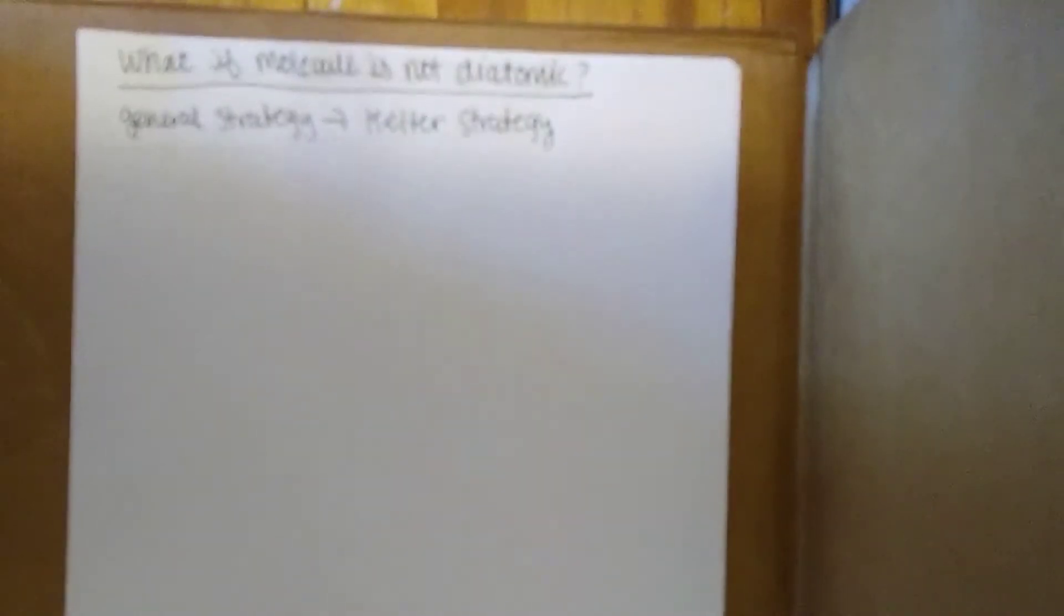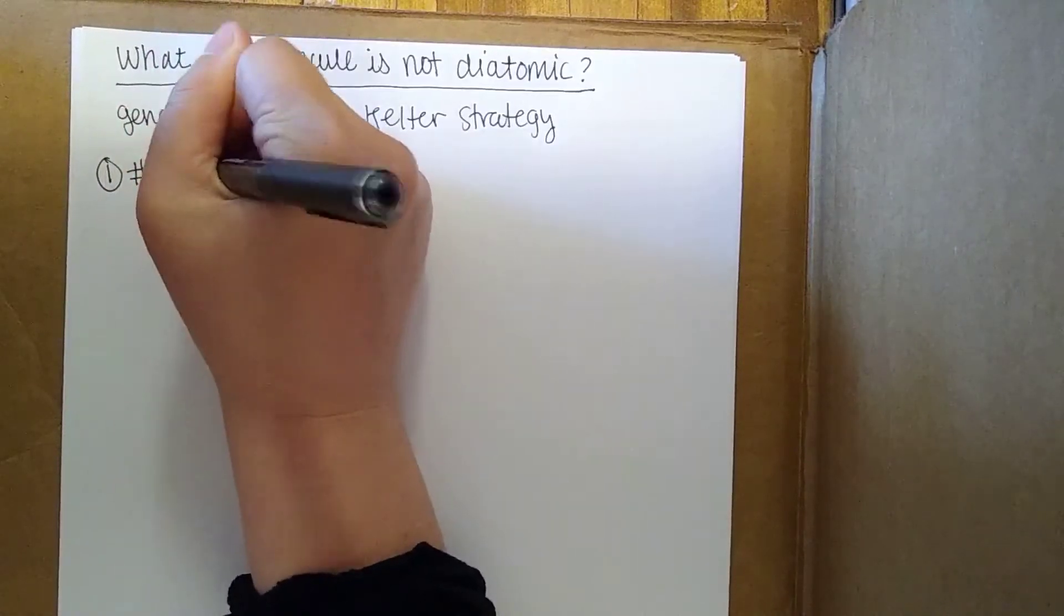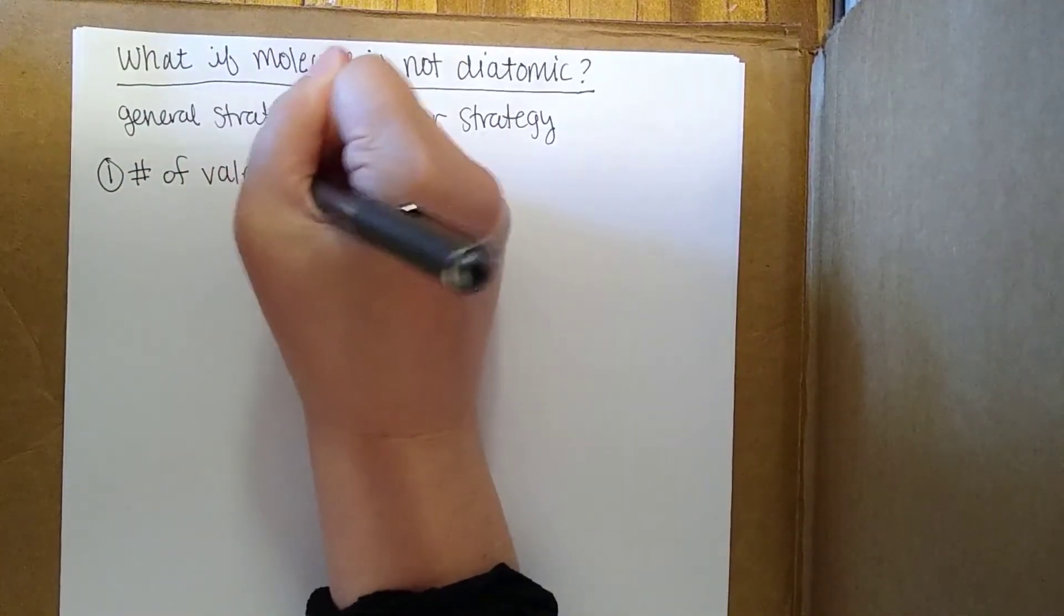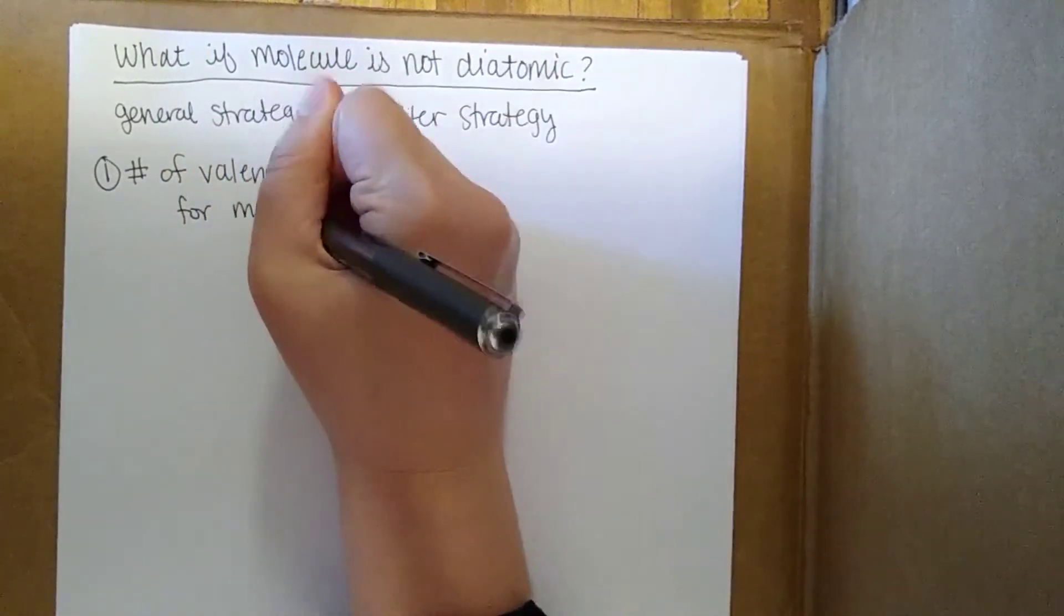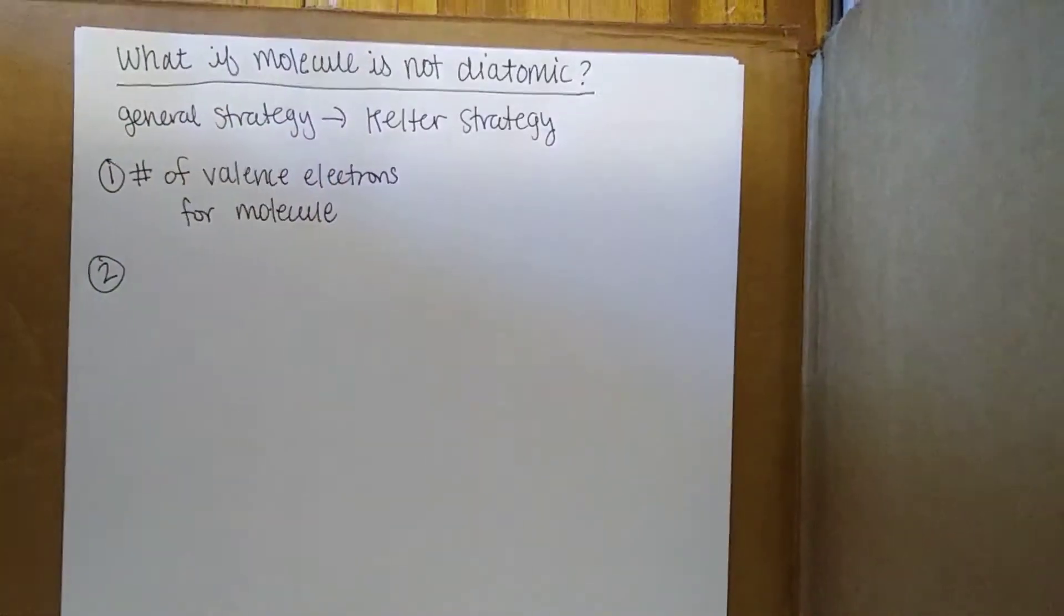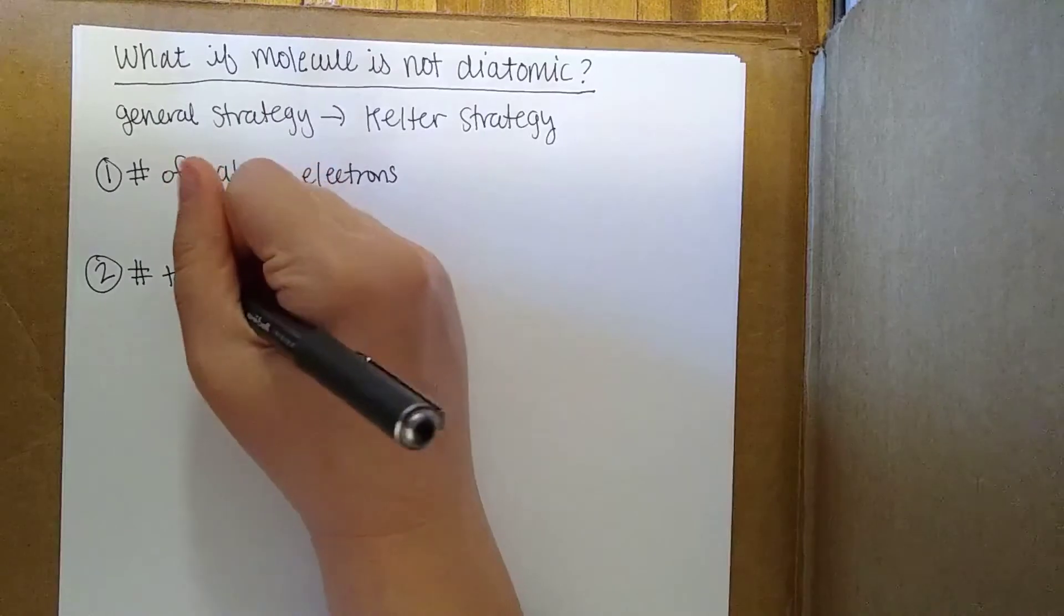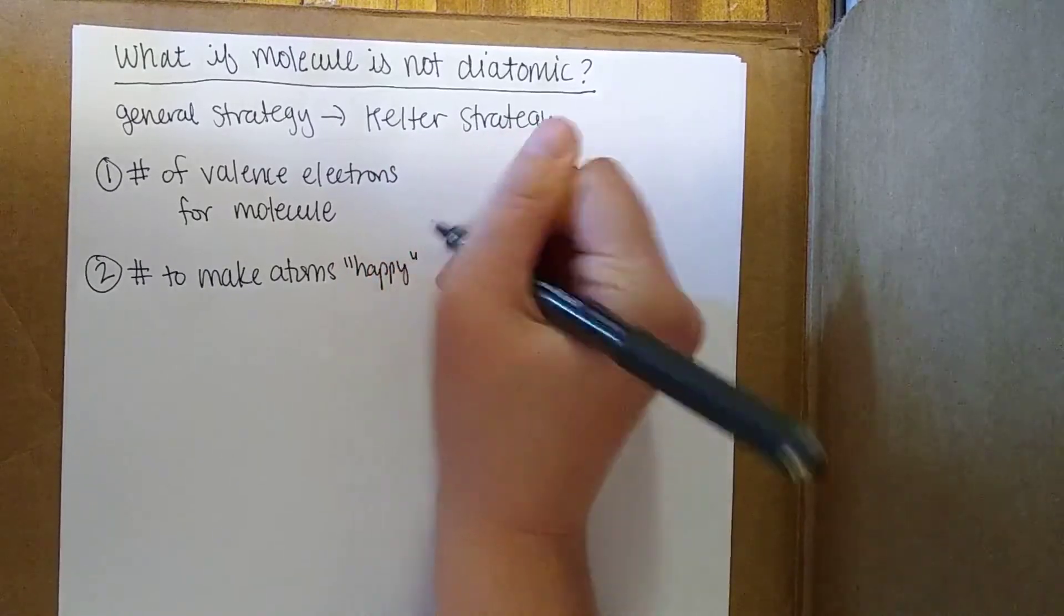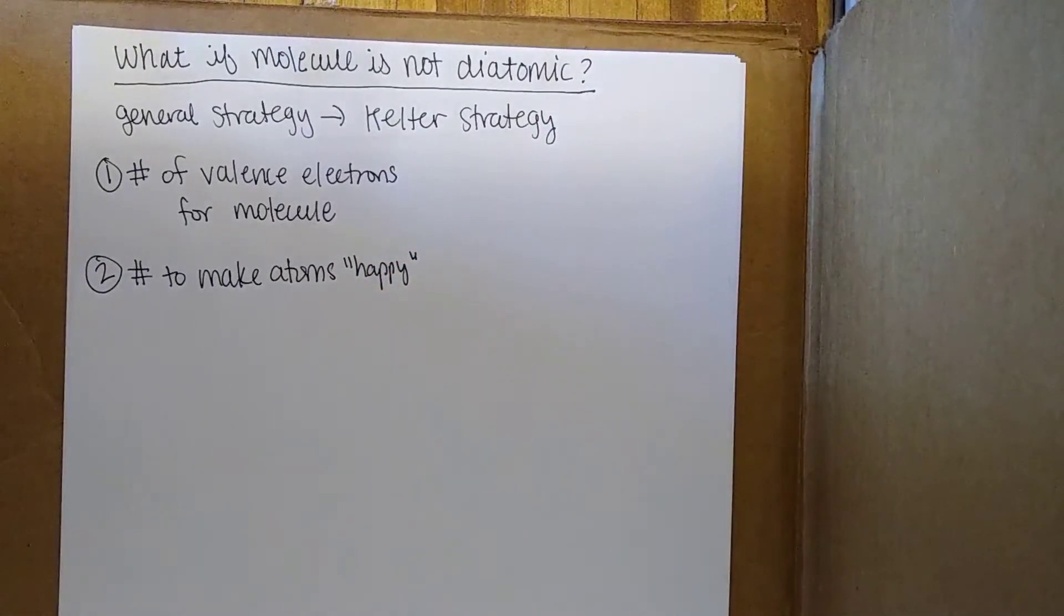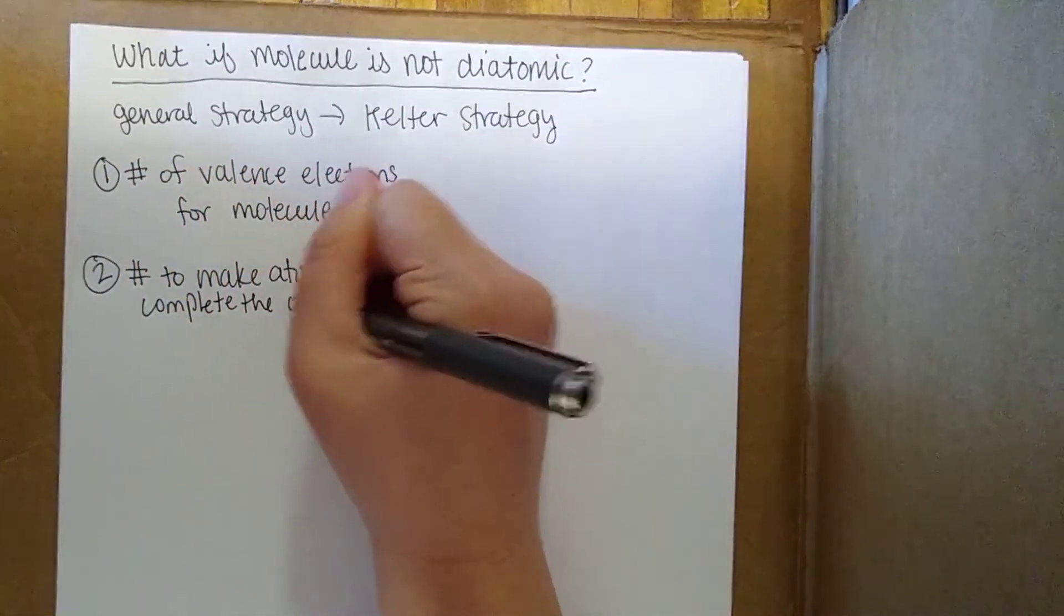So the first thing we need to know is how many valence electrons are there for the whole molecule. The next thing we need to figure out is basically how many are missing. So we need to know the number to make the atoms happy, to complete the octet.